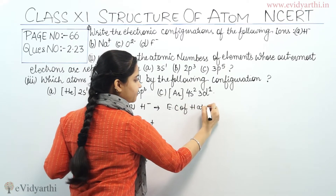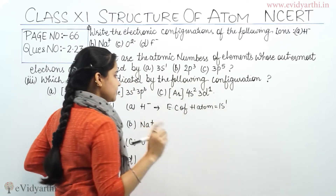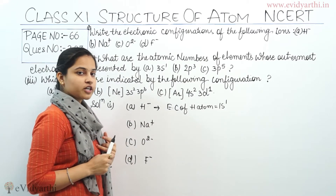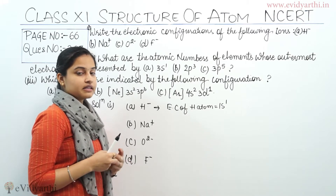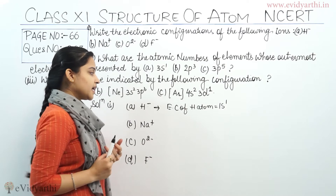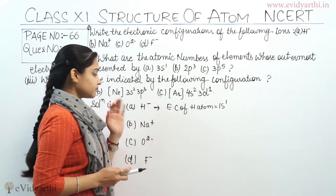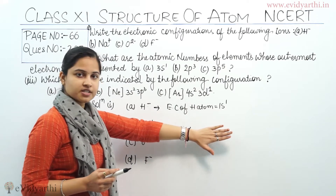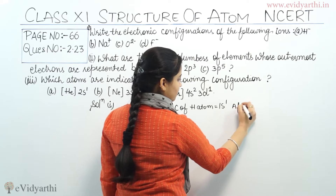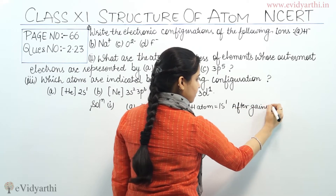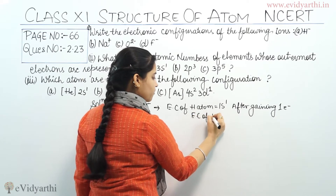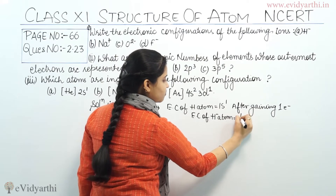For the solution of H: the electronic configuration of hydrogen atom is 1s1. Since there is a gain of 1 electron, we have H negative. The negative sign indicates the gain of electrons. The electronic configuration of simple hydrogen atom — which has no charge — is 1s1.